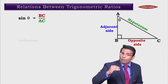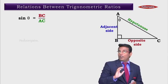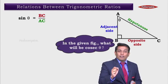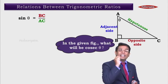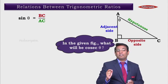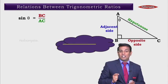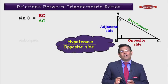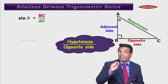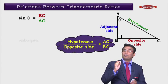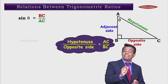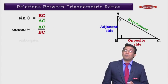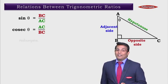Now let's take one more trigonometric ratio. Observe very carefully — we are trying to get a relation. In the given figure, what is cosec theta? According to the definition, cosec theta is equal to hypotenuse upon the opposite side. Here the hypotenuse is AC and the opposite side is BC, so cosec theta is equal to AC upon BC.